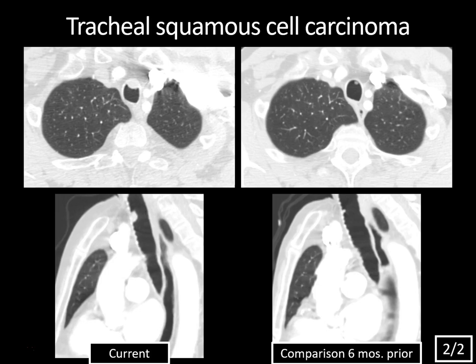Primary tracheal and bronchial tumors are not very common but are usually malignant. The most common is squamous cell carcinoma, typically seen in patients with a prior smoking history. It's a good idea to get a follow-up study when you see a non-dependent intraluminal lesion without gas. Other primary endobronchial malignancies include adenocarcinoma, small cell carcinoma, carcinoid, and salivary gland origin tumors like mucoepidermoid and adenoid cystic carcinoma. Don't forget endobronchial metastases seen in melanoma or renal cell carcinoma, among others.